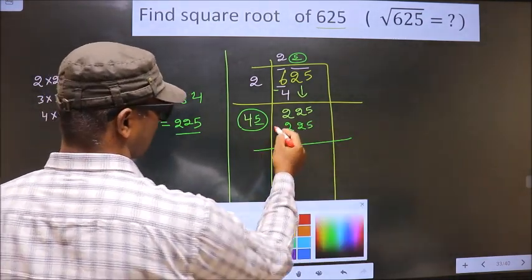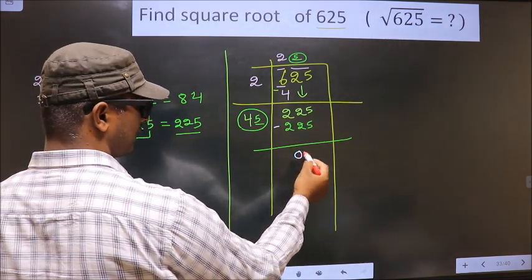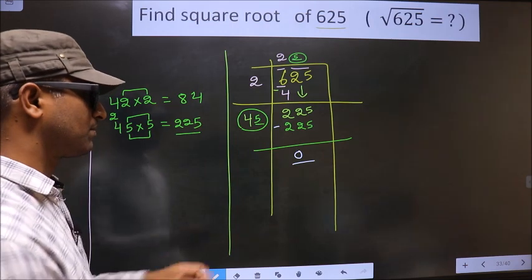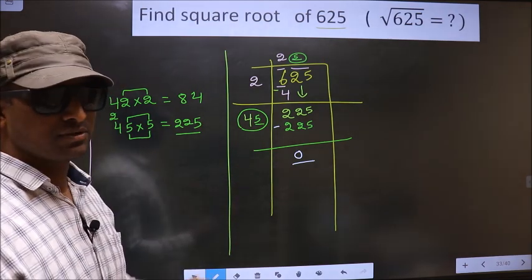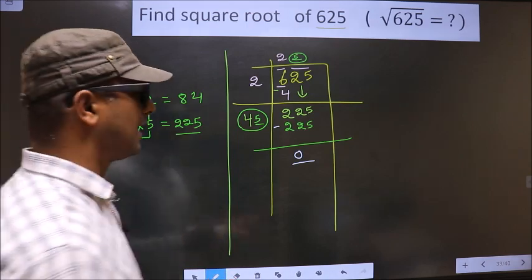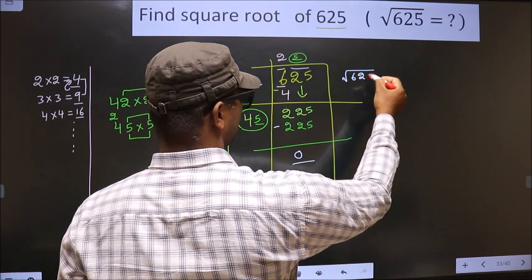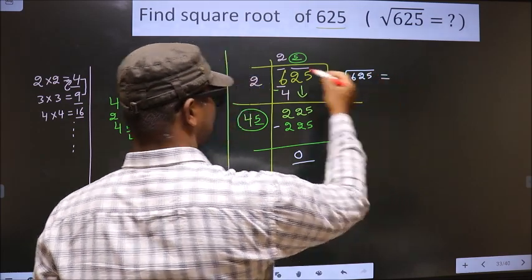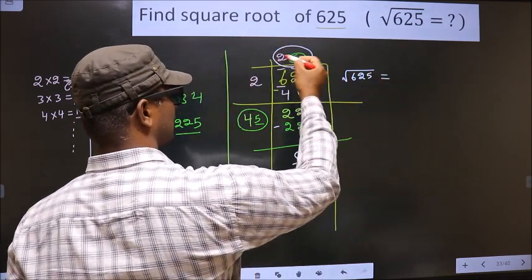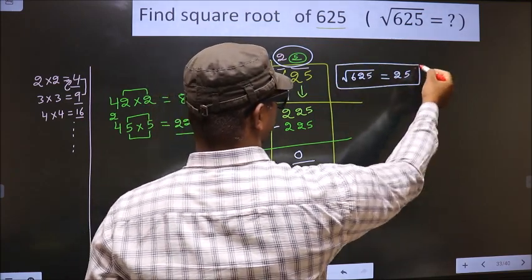Now you subtract 225 minus 225 we get 0. We got 0 which means given number is a perfect square and the square root of 625 is this number 25. So this is our answer.